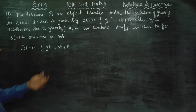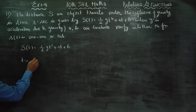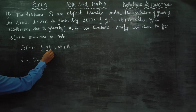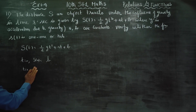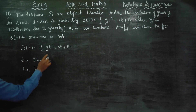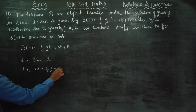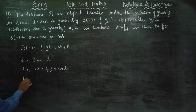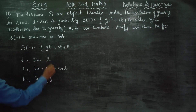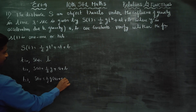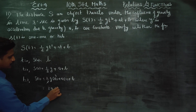We shall start with t equal to 0. When t is equal to 0, s of 0 is equal to b. When t is equal to 1, s of 1 is equal to 1 by 2 g plus a plus b. When t is equal to 2, s of 2 is equal to half g into 2 squared, which gives 2g plus 2a plus b.